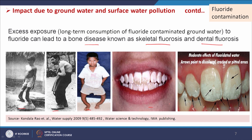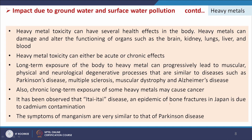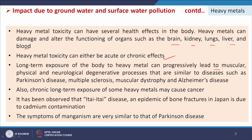These are some impacts due to contaminated ground water. Heavy metals may also be present in ground water, and if we use it as drinking water without any treatment, it can create different types of health problems. Heavy metal toxicity can have several health effects in the body — heavy metals can damage and alter the functioning of organs such as the brain, kidney, lungs, liver, and blood. Heavy metal toxicity can be either acute or chronic: if in higher concentration they may show immediate impact, and at lower concentration with long-term consumption they can give chronic impact. Long-term exposure to heavy metals can progressively lead to muscular, physical, and neurological degenerative processes similar to diseases such as Parkinson's disease, multiple sclerosis, muscular dystrophy, and Alzheimer's disease.